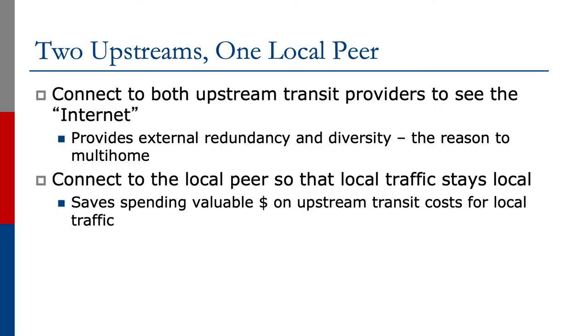We're going to look at the case of two upstream providers, and we'll keep one local peer in here to keep the examples complete. It could be a single local peer or an internet exchange point — we've covered those scenarios up to now. We want to focus on the two upstreams. We connect to both upstream providers to see the internet, so we get external redundancy and diversity — the whole reason why we want to multi-home, as we covered at the start of this series. We connect to the local peer so that local traffic stays local.